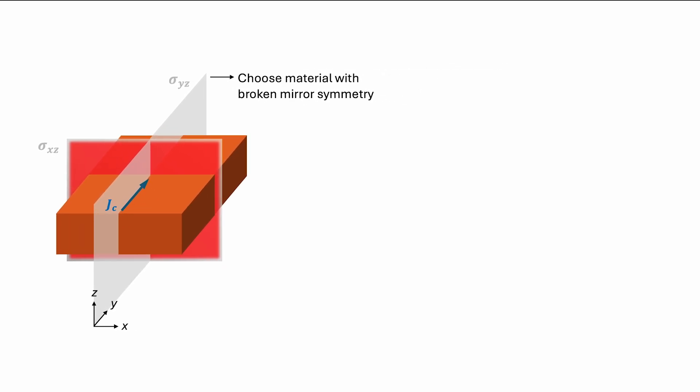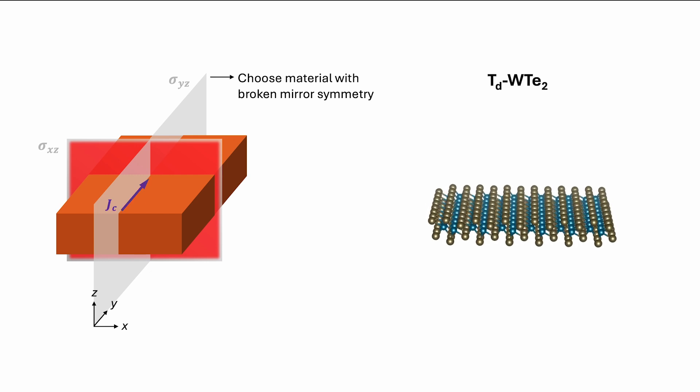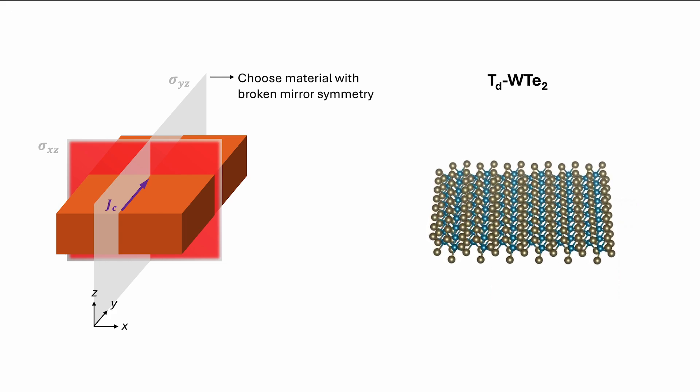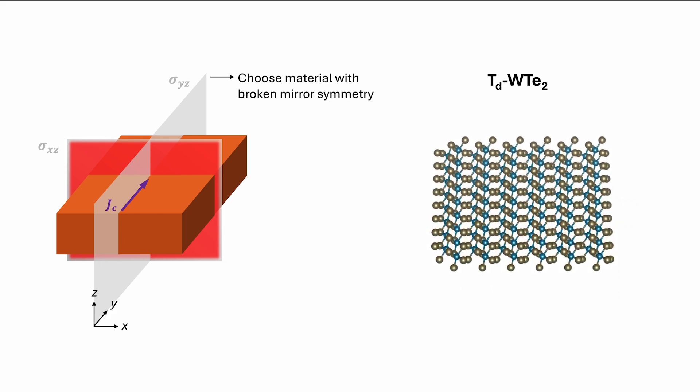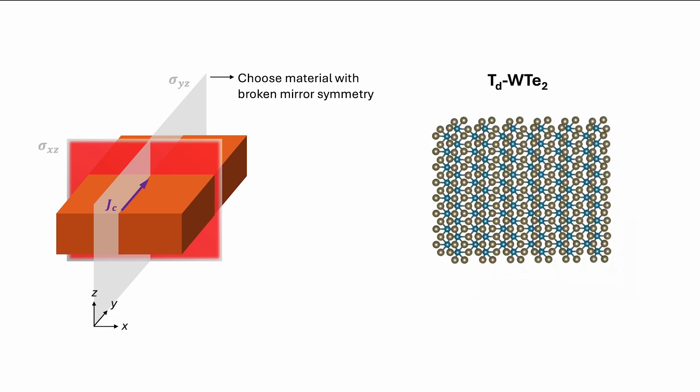This can be achieved using a van der Waals material like the TD phase of tungsten ditelluride, which exhibits an orthorhombic crystal structure. As we can see, the material itself breaks mirror symmetry along its crystallographic AC plane, while preserves it along the BC plane. Thus, if we apply current along the A-axis to break the mirror symmetry along the BC plane, we can effectively break both the mirror plane symmetries.